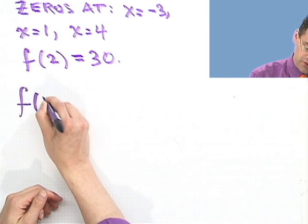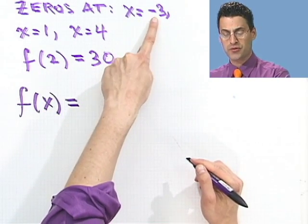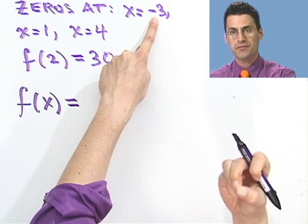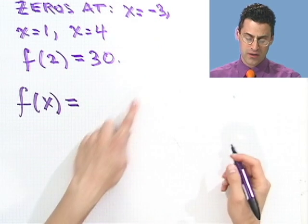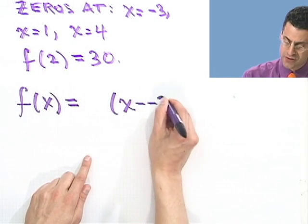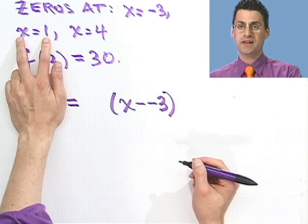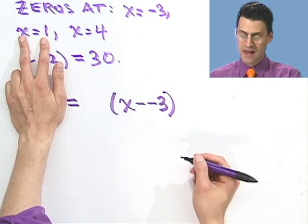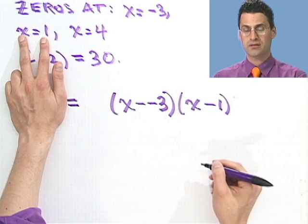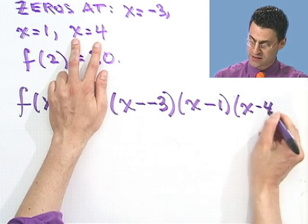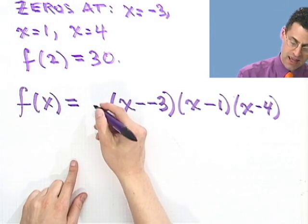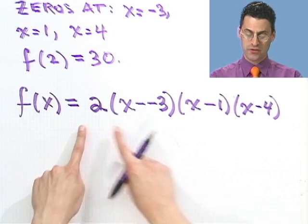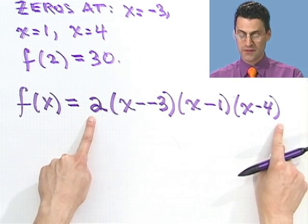And the secret is to use the factor theorem again. So the factor theorem tells us that x equals -3 is going to be a zero precisely if x minus -3 is a factor. So what that means is that I know that x minus -3 must be a factor of this. But then I can do the same thing here. If x equals 1 is a zero, that means that x minus 1 must be a factor. And if x equals 4 is a zero, then x minus 4 must be a factor. So in fact, that must be the factorization of f. Except there may be some big coefficient in front, some number. I'll call it a.